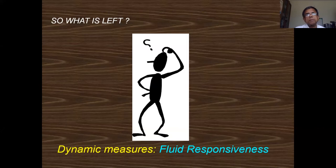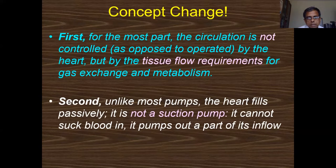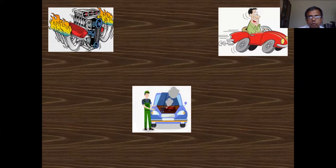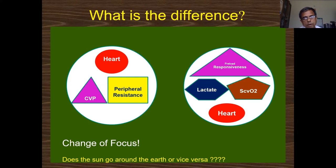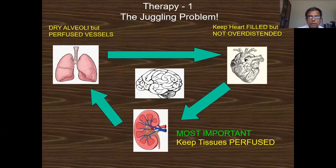We now rely on dynamic measures. The heart is a slave providing tissue needs — it cannot suck in blood, it allows blood to flow in based on systemic pressures. We need a paradigm shift: look at tissue need and whether the heart is maintaining it. You can monitor this from the central vein via lactate and oxygen saturation. If these are good, tissue needs are met; if not, tissues will switch off and die.